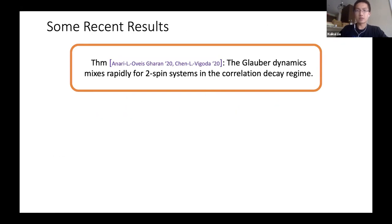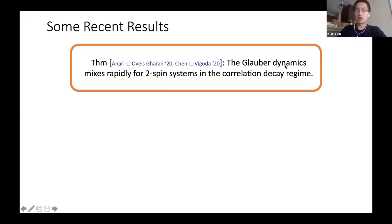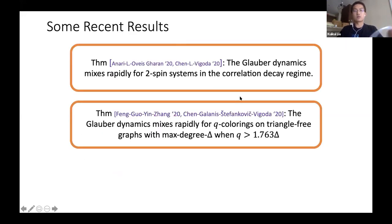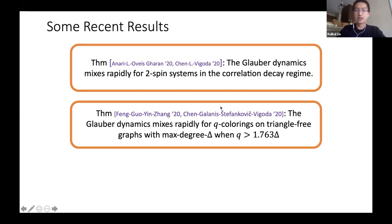Recently we managed to close this gap. In joint work with Nima, Shayan, and in a follow-up work with Eric, we showed that a very natural and simple Markov chain called the Glauber dynamics actually mixes rapidly for any two-spin system in the so-called correlation decay regime. This essentially matches all known results for two spin systems for correlation decay and interpolation. There's also follow-up work getting the same result for q-colorings on triangle-free graphs, which was also solved via interpolation by Piyush, Jingcheng Liu and Alistair Sinclair.